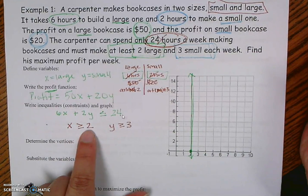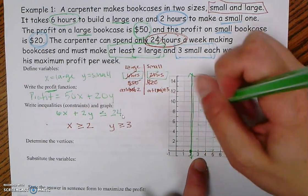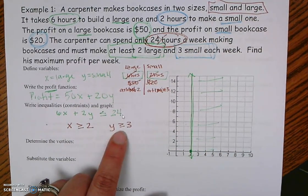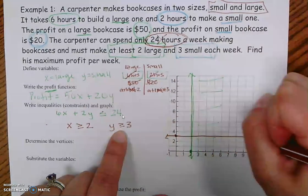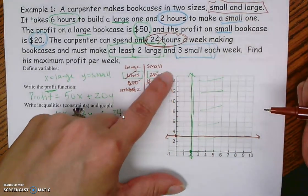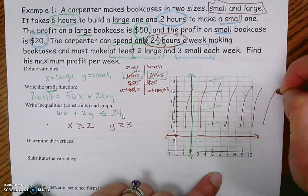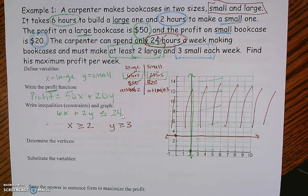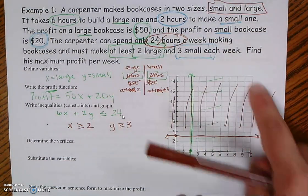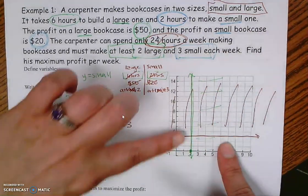If my x values have to be bigger than 2, I look at where the numbers are bigger on the x-axis — on the right side. Then I graph my y values: y has to be greater than or equal to 3, so my line goes side to side. Y values on the y-axis are bigger on the top, so I shade above my line. When graphing inequalities, the part you keep is where the shading overlaps. So far, my answer is somewhere in the overlapping region; I'm not using the lower or left-side areas.